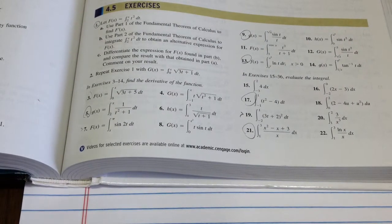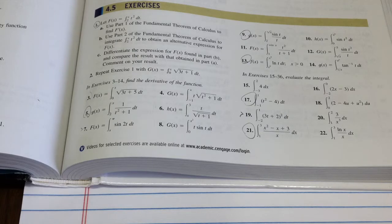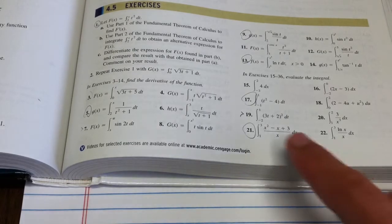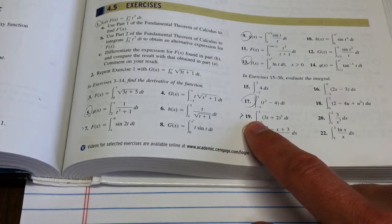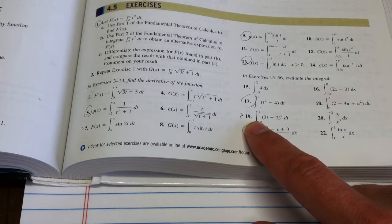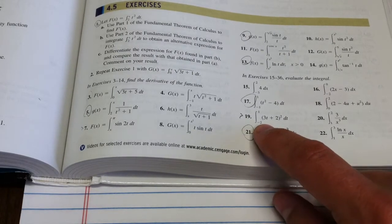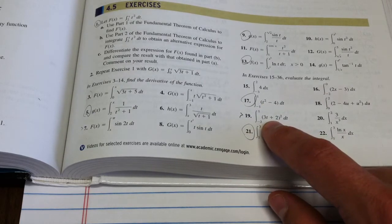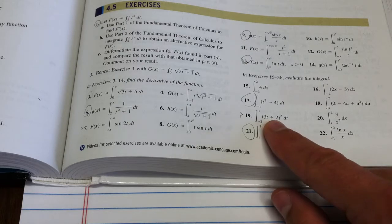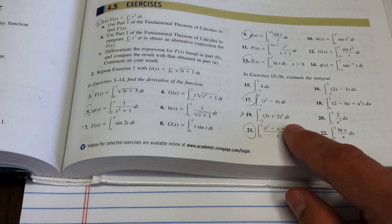Here's another rockin' problem that uses the fundamental theorem of calculus, this time part 2. We're going to be working on 19 in 4.5, that's on page 475, and it says evaluate the integral. And our integral is from negative 2 to 1 of the quantity 3t plus 2 squared dt.